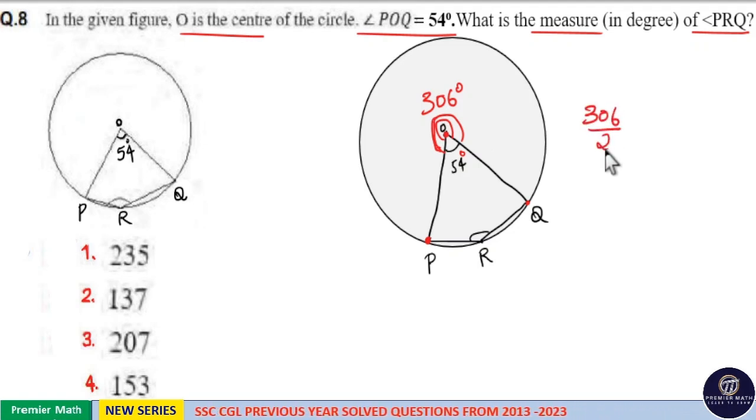Half of 306 is equal to 153 degrees. So this arc RPQ can create 153 degrees at any point on the remaining part of the circle.